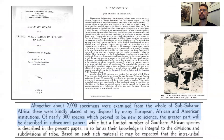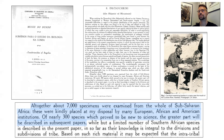The most comprehensive revision of the beetles currently classified within Jalapenina was made by Karla Koch. Here is my favorite quote: 'Altogether, about 7,000 specimens were examined from the whole of sub-Saharan Africa. These were kindly placed at my disposal by many European, African and American institutions. Of nearly 300 species which could be new to science, the greater part will be described in subsequent papers.' As Koch stopped working on the group right after this publication, a few questions emerged: what happened to this material, and what about those 300 new species?